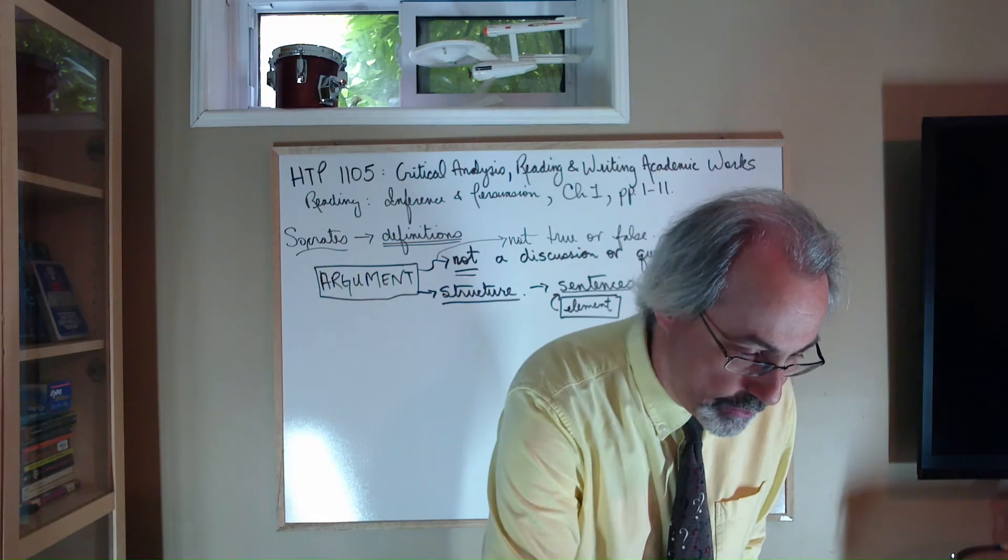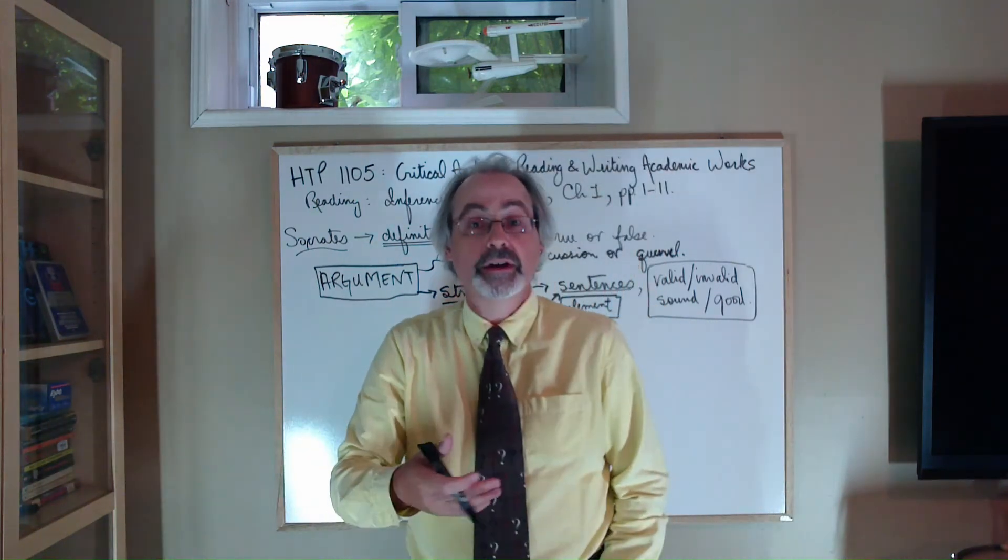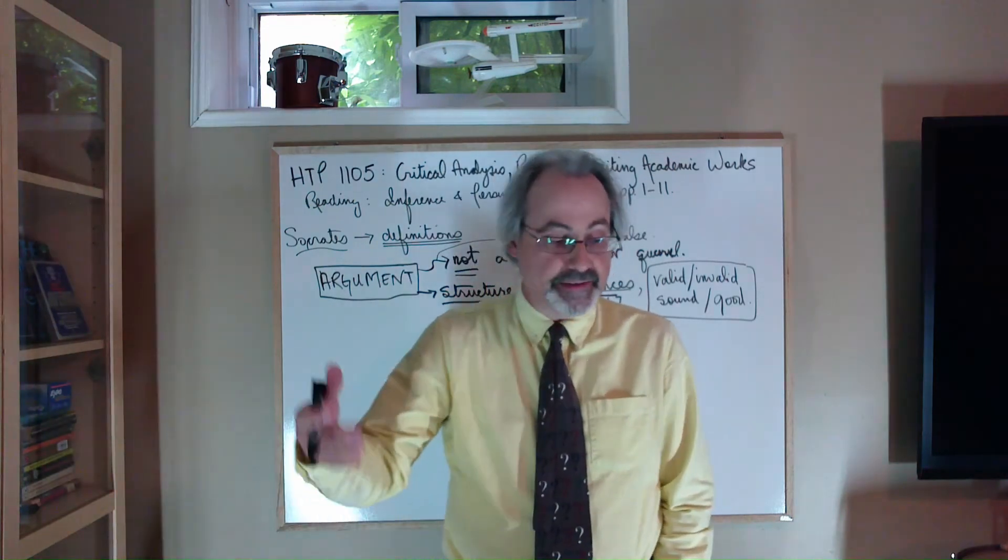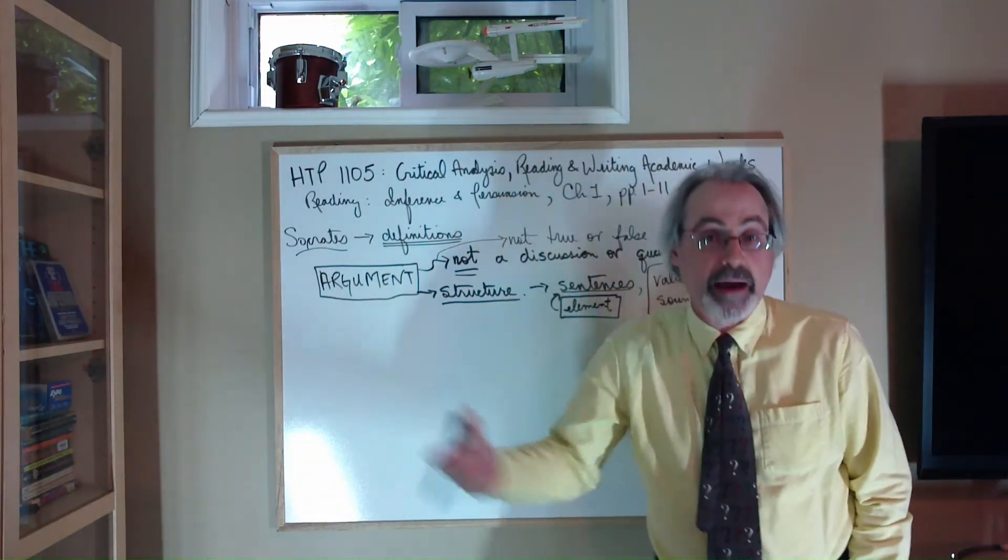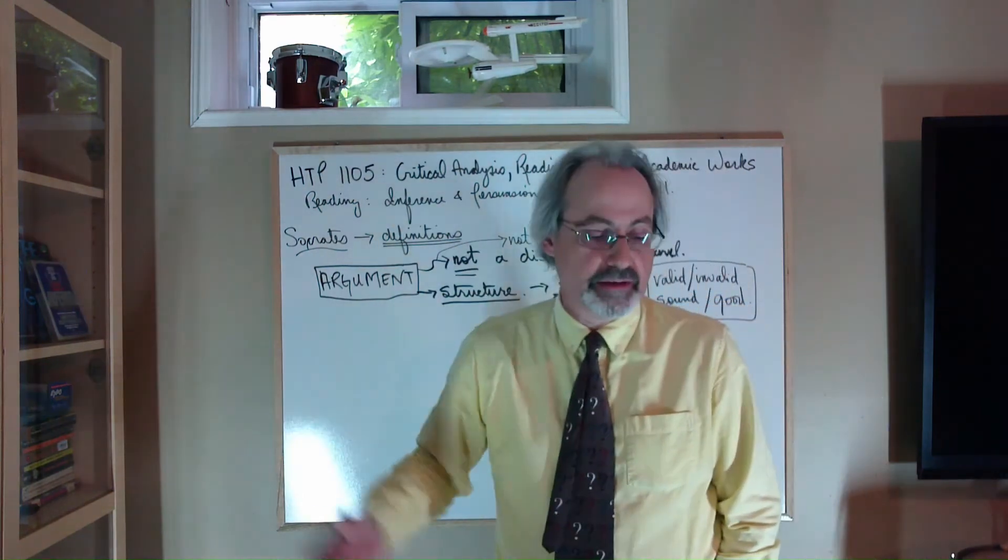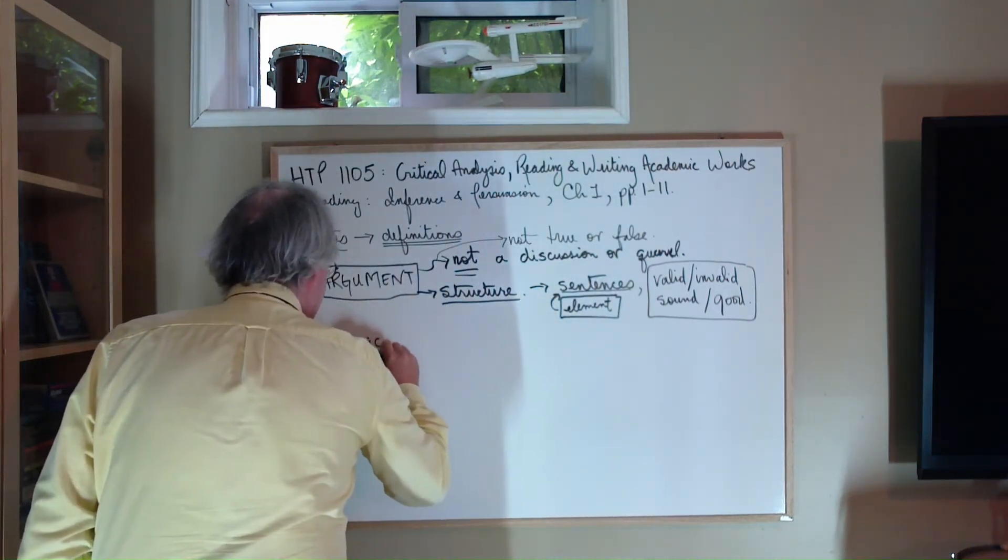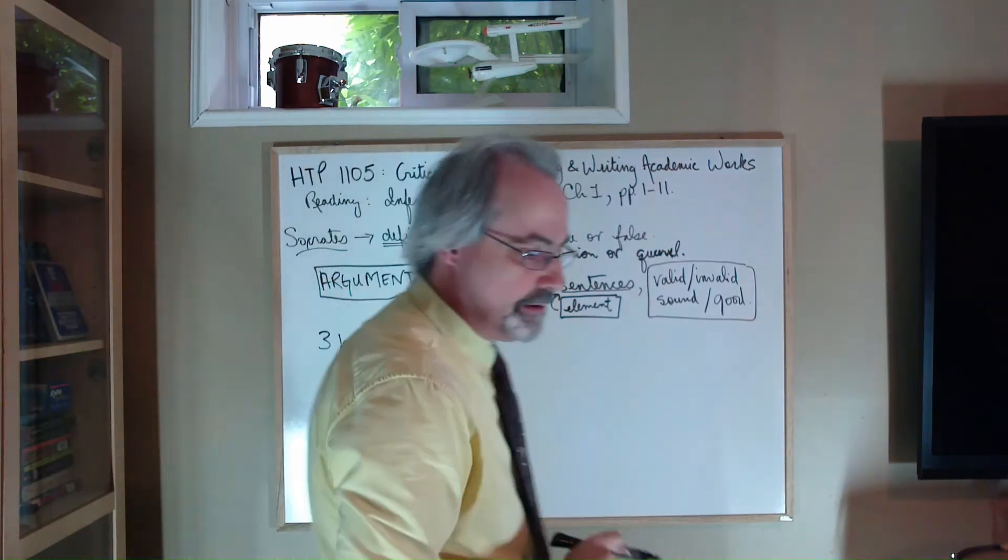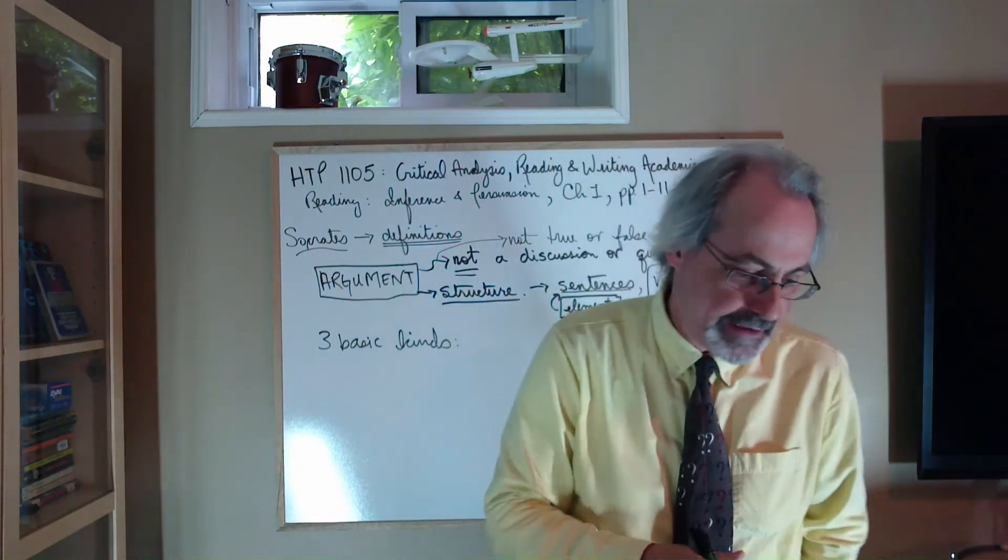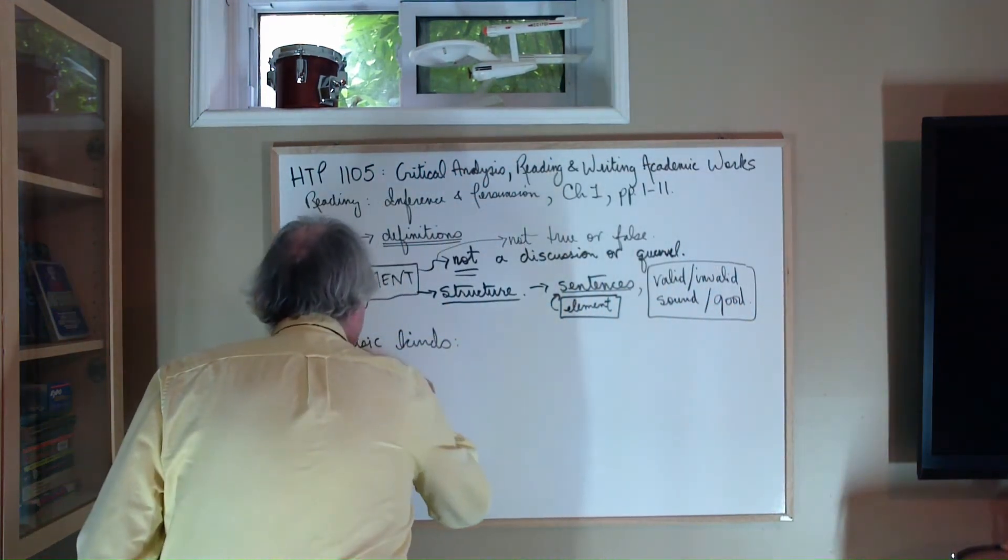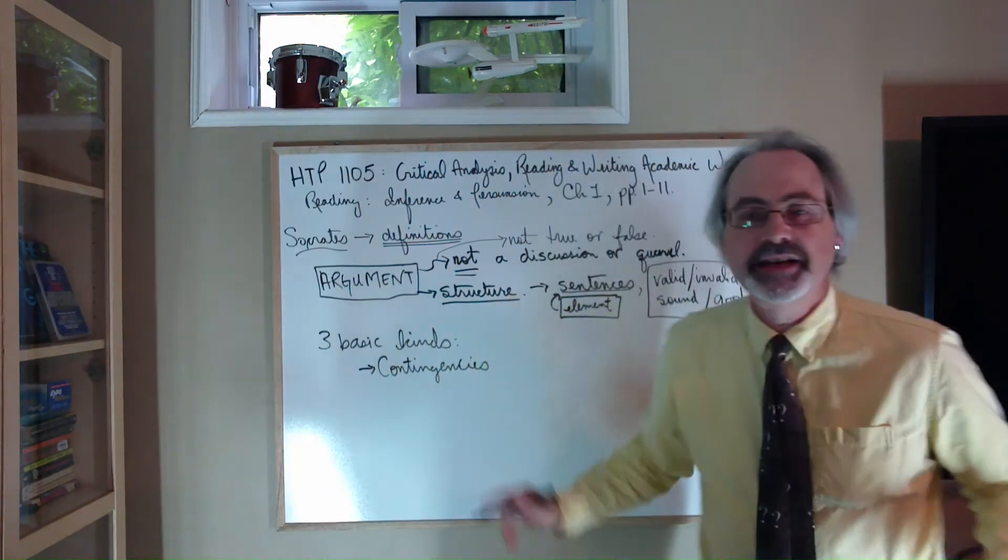Well, as you know, sentences are basically grammatical units. They have a subject and a predicate. A sentence typically is a grammatical unit that says something about the world. And sentences, for our purposes, because we're not doing a course in grammar, we could spend a lot of time talking about sentences. But for us, sentences are going to come in three basic kinds. The three basic kinds of sentences that we're going to talk about look like this. First and most important, what are called contingencies.